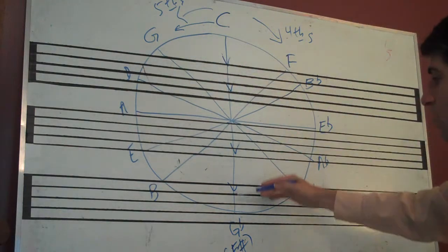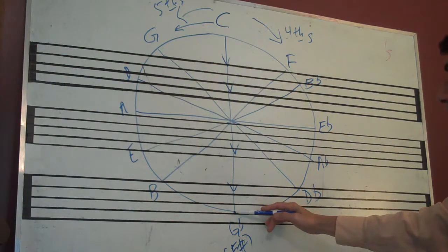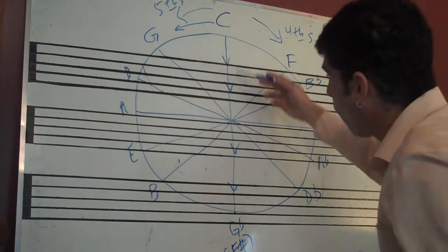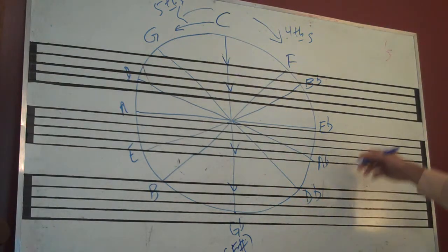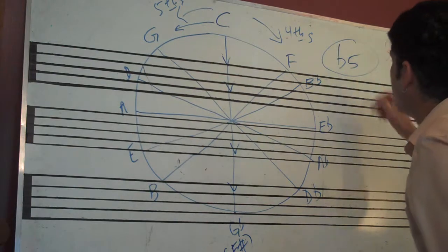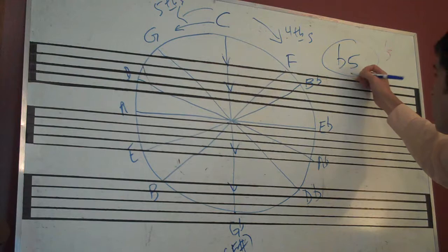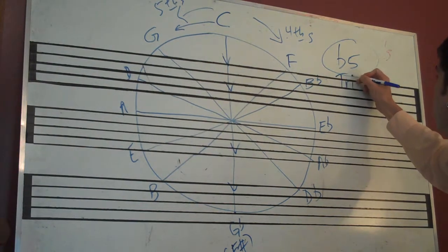That is this. G-flat. A cross is flat five. It's a flat five, a cross. And sometimes we call this a tritone.